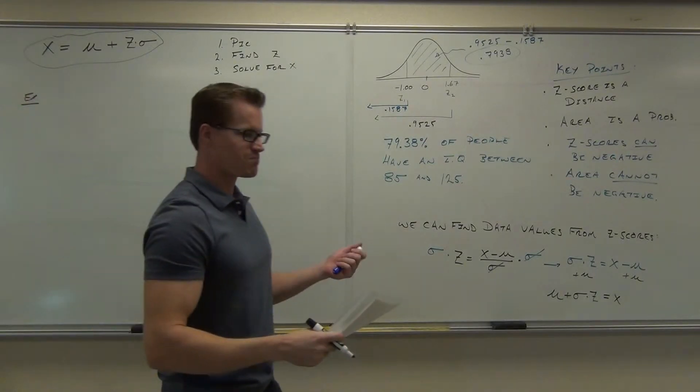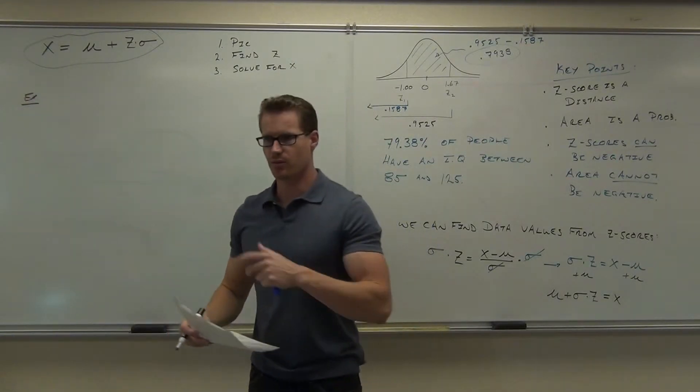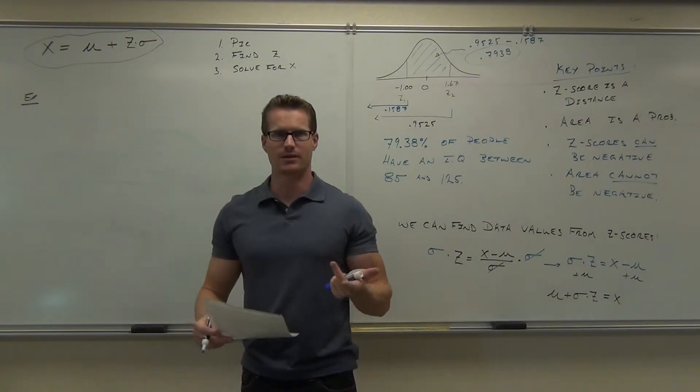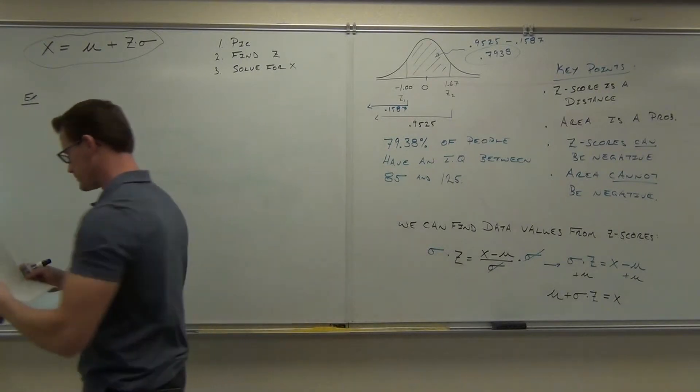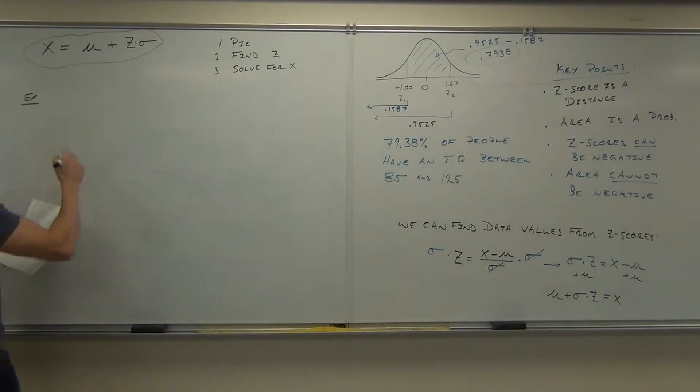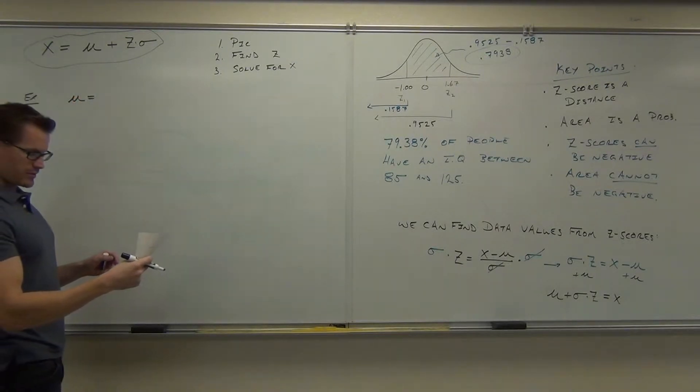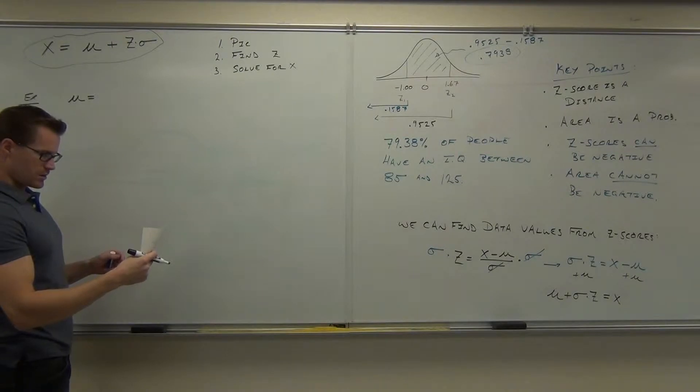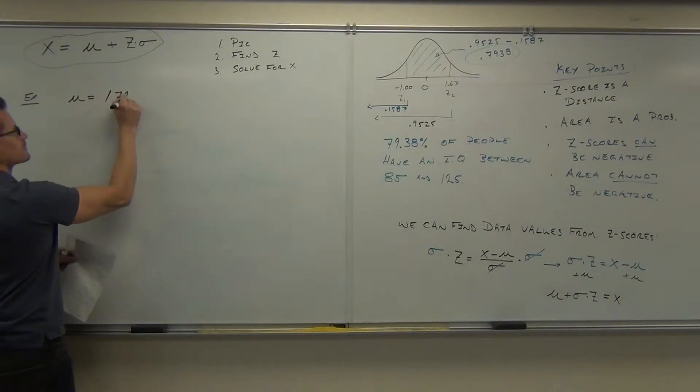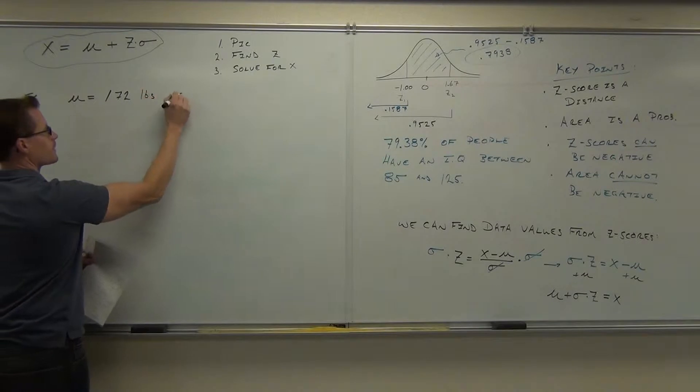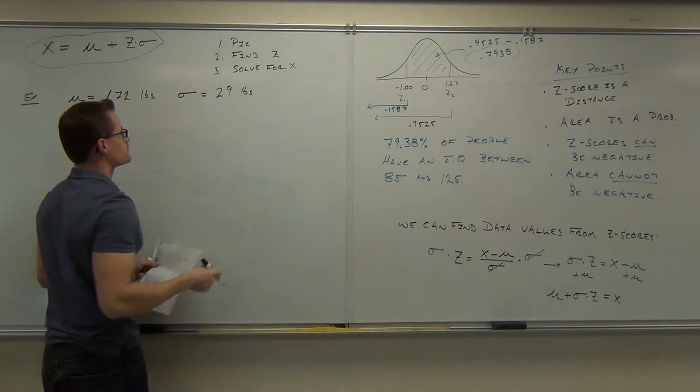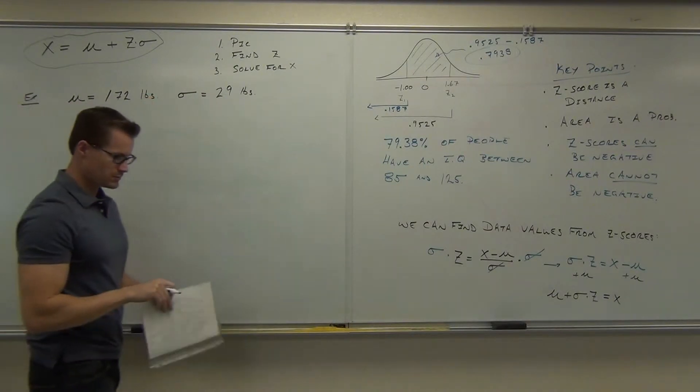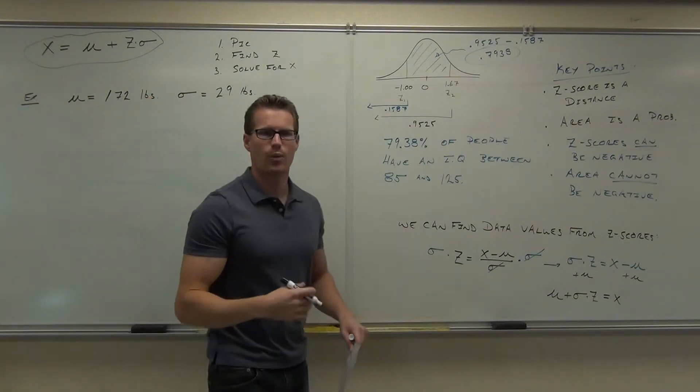We're going to use our weight example again, the weight of those, remember those men that we calculated? Well we didn't calculate them, I gave you the men's weights, the mean and the standard deviation from our example from Monday. The mean weight was 172 pounds, with a standard deviation of 29 pounds. So this is that weight example.